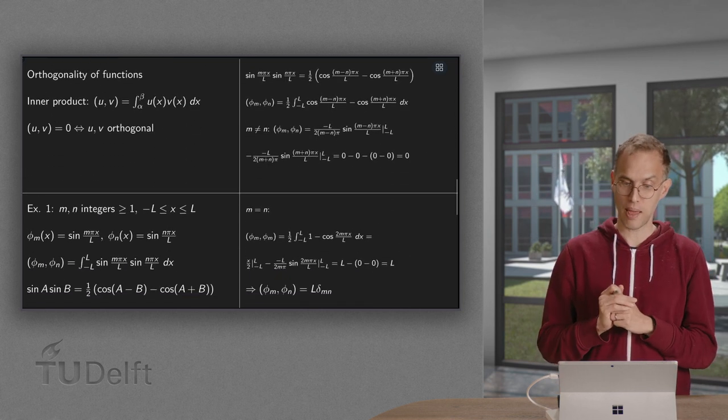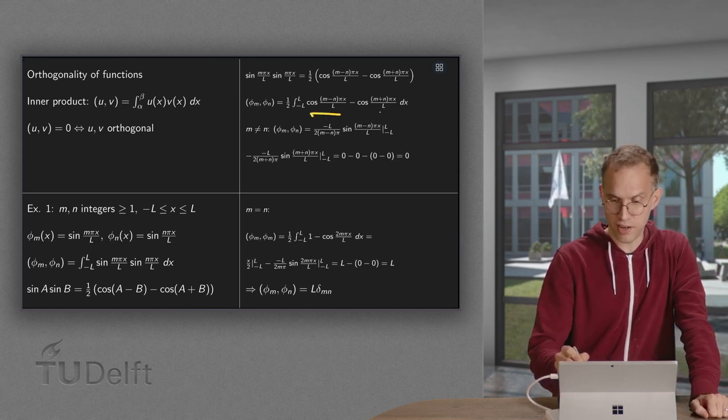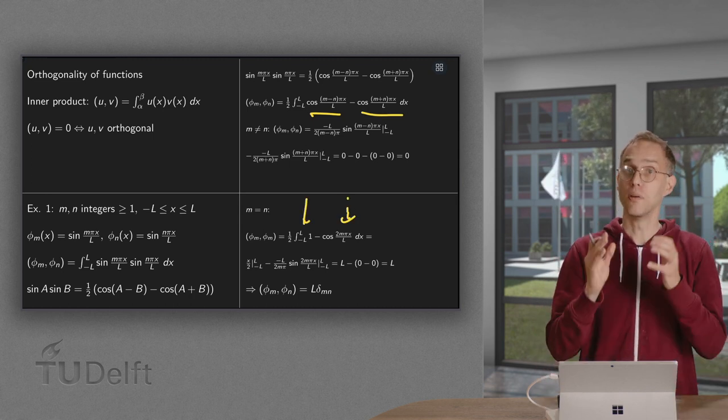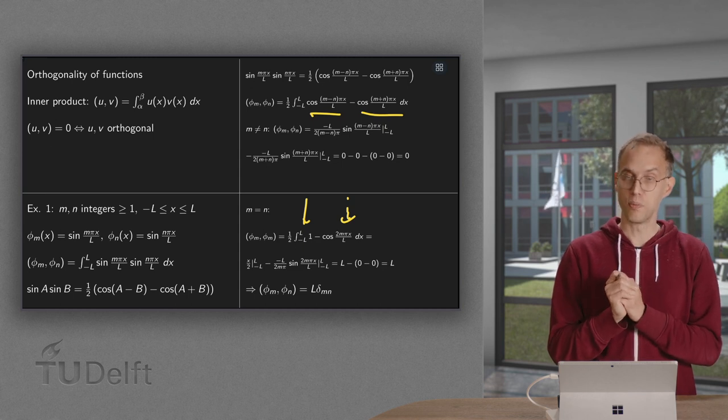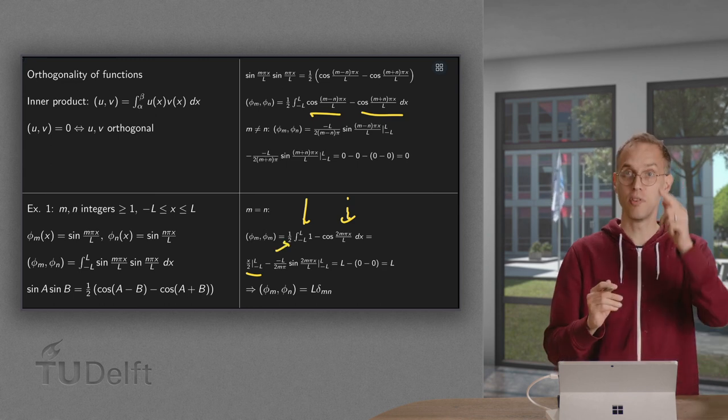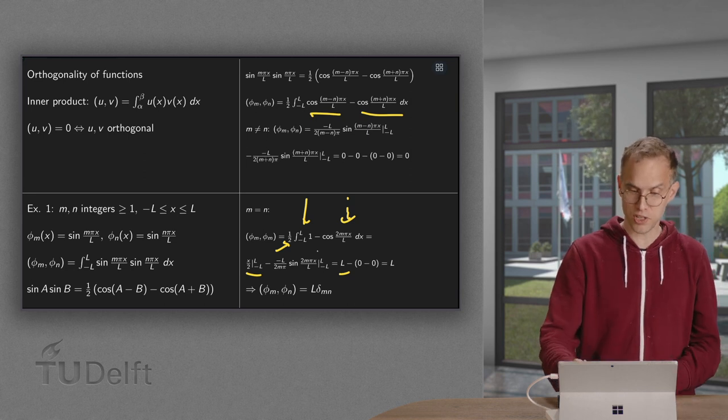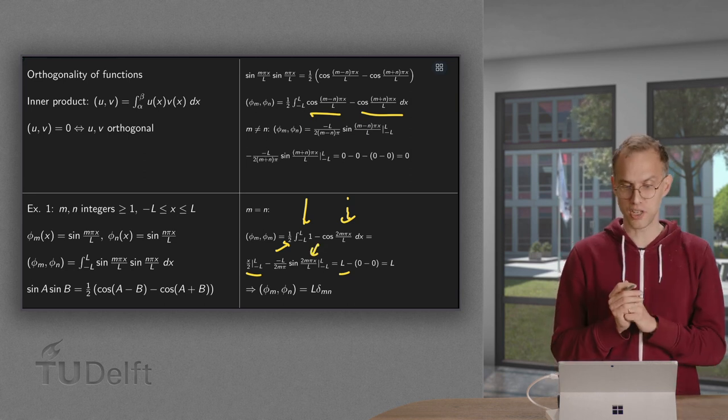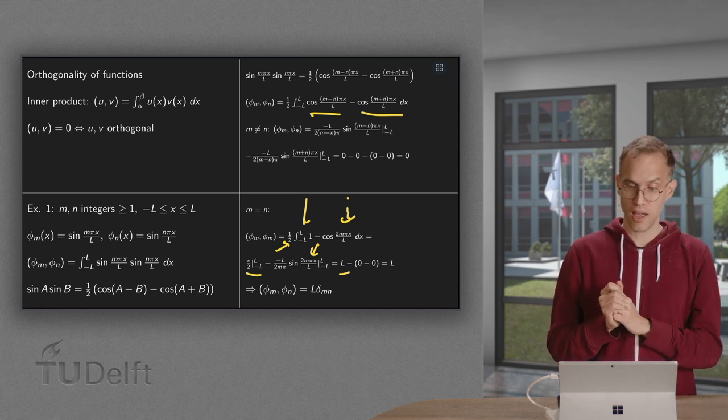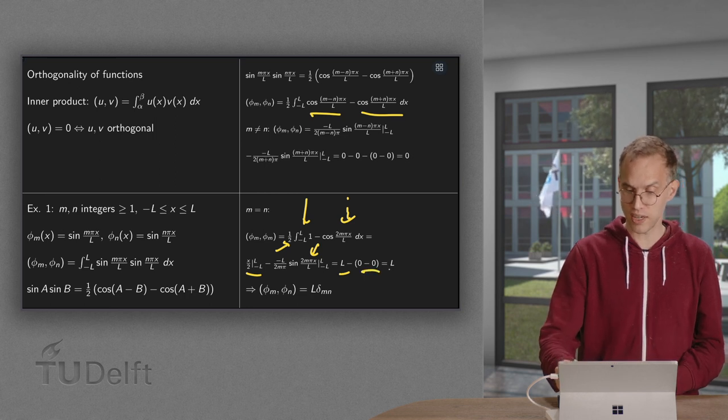For m equals n, we just plug in m equals n. We get a one and a cosine. We compute the antiderivative. The antiderivative of one equals x. It's one half and x over two between l and minus l. That's going to give us a factor of l. And the cosine becomes a sine between l and minus l. We get the sine of 2m pi equals zero, and the sine of minus 2m pi equals zero as well. So we get l.